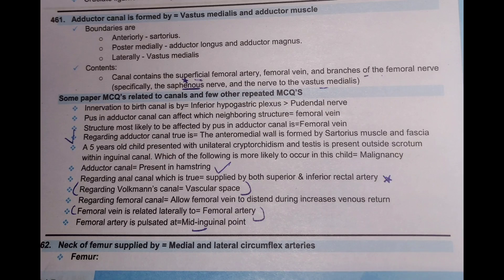The contents of the adductor canal include the superficial femoral artery, femoral vein, and branches of the femoral nerve. The important branches are the saphenous nerve and the nerve to vastus medialis. To remember: femoral artery, superficial femoral artery, femoral vein, and the femoral nerve — especially the saphenous nerve and the nerve to vastus medialis.